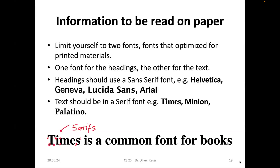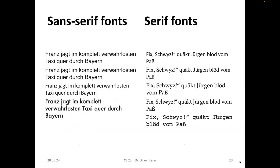If the information is going to be read on paper, limit yourself to two fonts optimized for printed materials — one for headings and one for body text. Headings are usually in a sans-serif font such as Helvetica, Geneva, Lucida Sans, or Arial. Serifs are the little dots at the characters that help the eye read faster. The main text should be in a serif font; popular choices for books include Times, Minion, and Palatino.